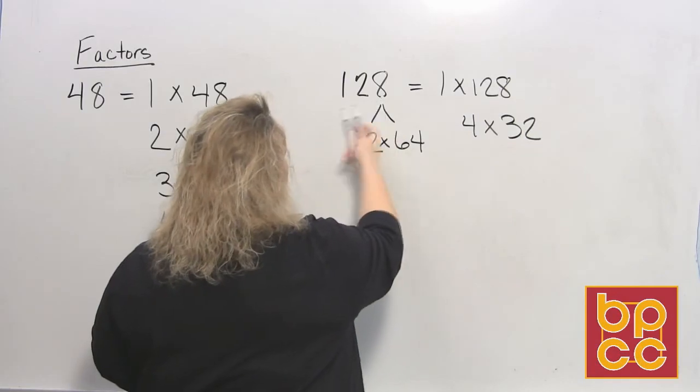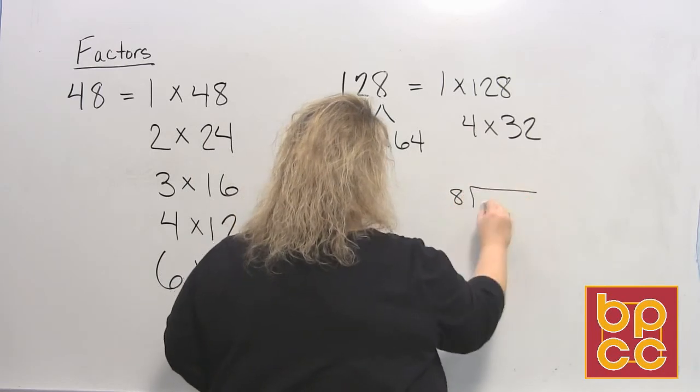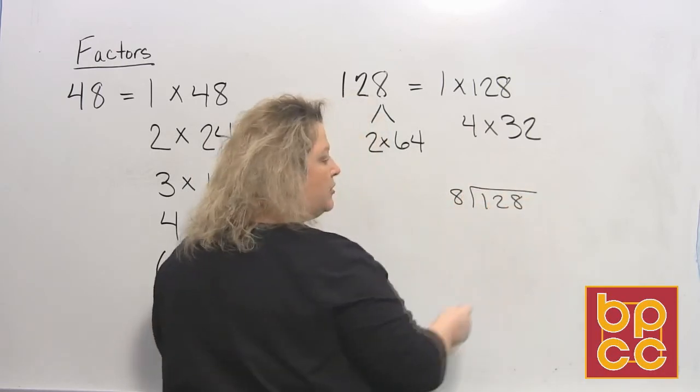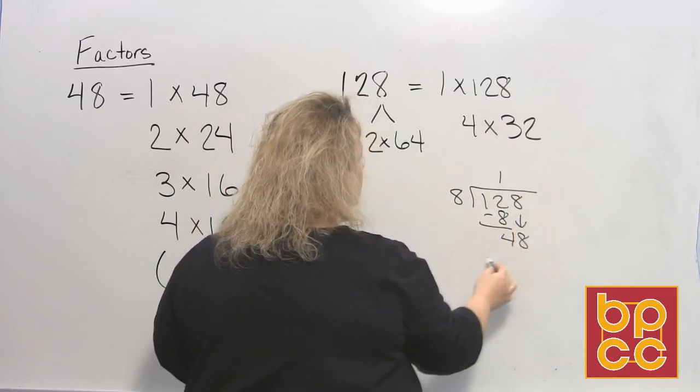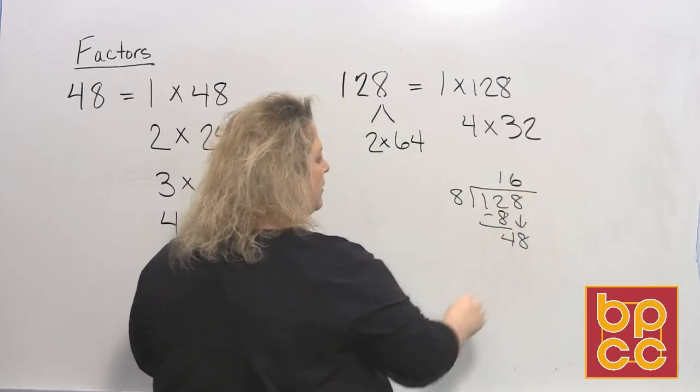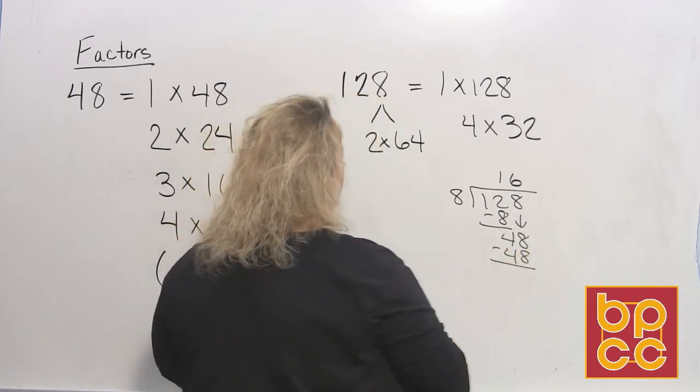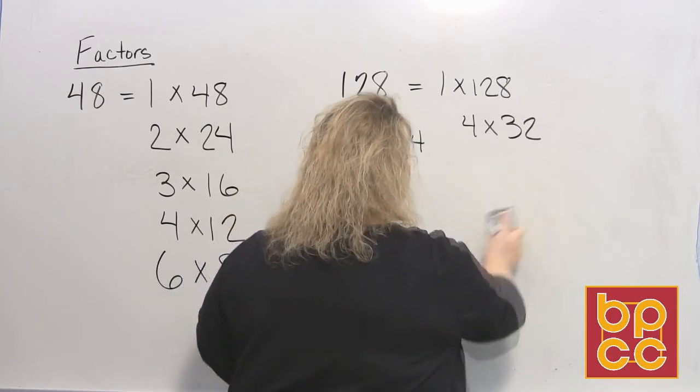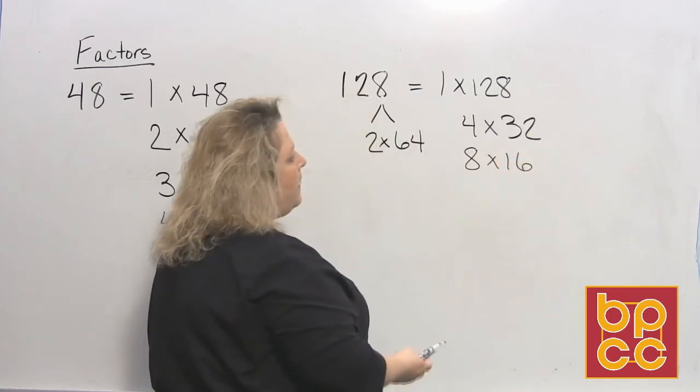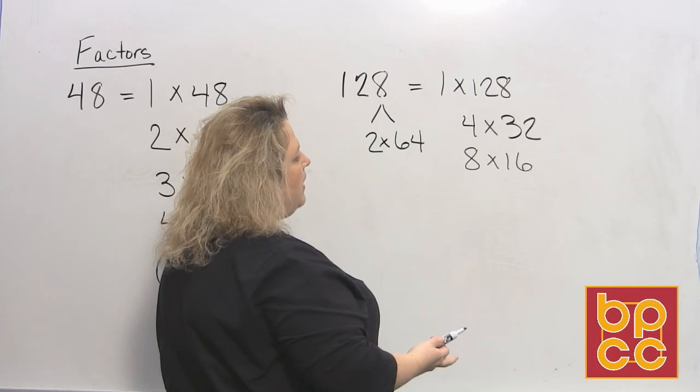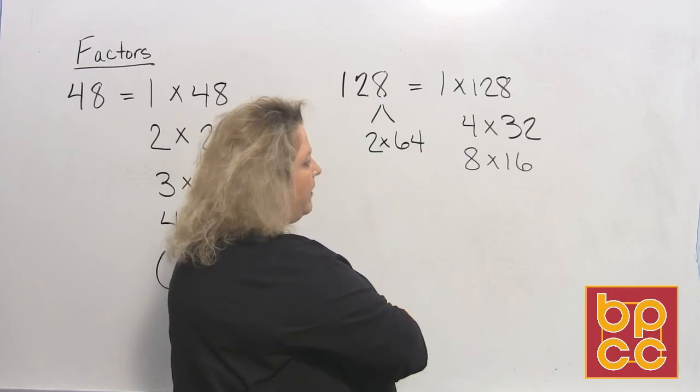For 8, since there's only 3 digits, you would have to do the division. 8 divides into 12 one time. That leaves 4. Bring down the next number. 8 divides into 48 six times, which makes 48. So 8 actually does divide into 128 sixteen times. That means 8 times 16 is 128. We said 9 and 10 don't go in there. 11, 12 won't go in there. So this is pretty much all of the factors that we can find that give us 128.